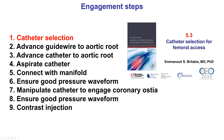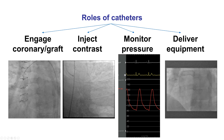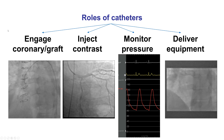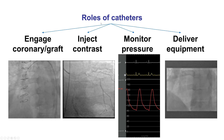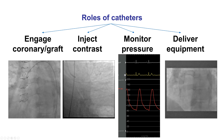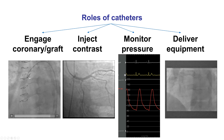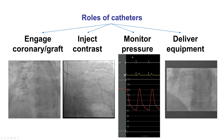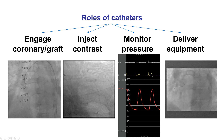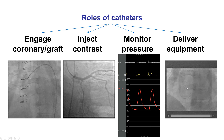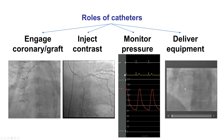The first step is to select the catheter that will be used to engage the coronary artery or bypass graft. There is more detail on this in video 5.3. However, some basic concepts are covered here, including the various roles of catheters, which are to engage, inject contrast, monitor the pressure, and deliver equipment such as balloons and stents.